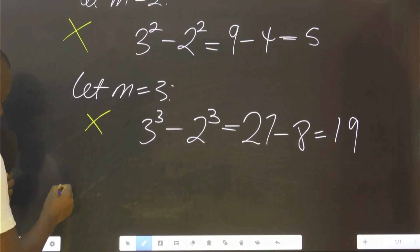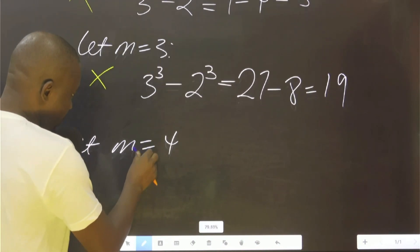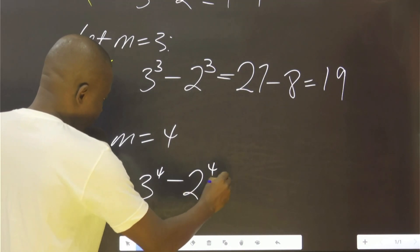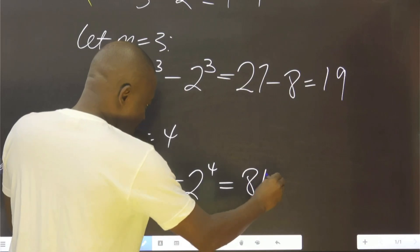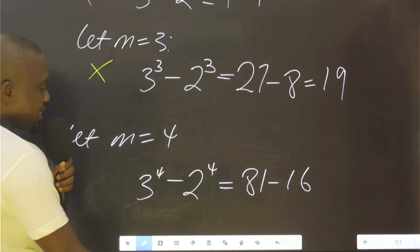Let's try 4. Let m be 4. 3 raised to the power of 4 minus 2 raised to the power of 4 equals 81 minus 16. 81 minus 16 equals 65.